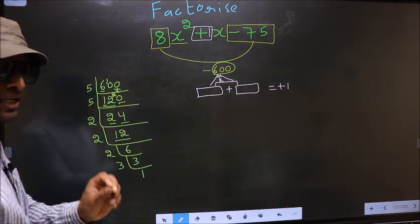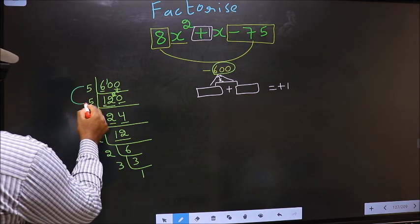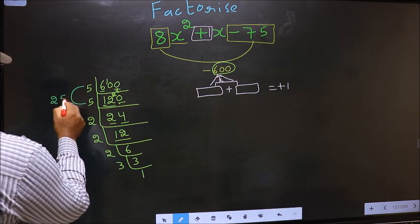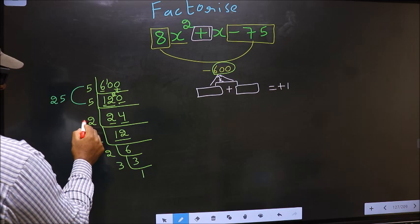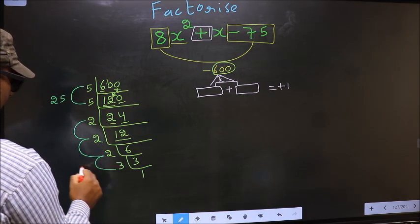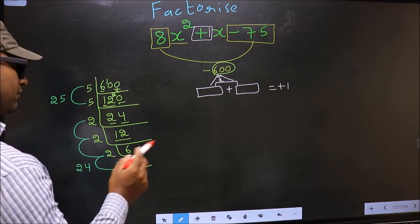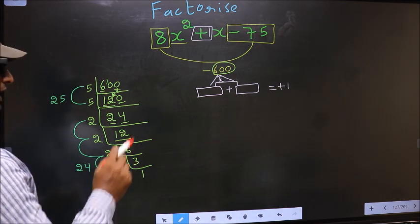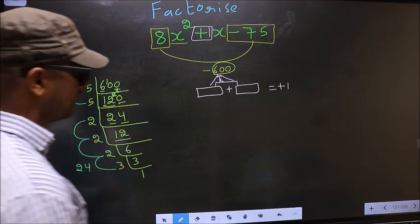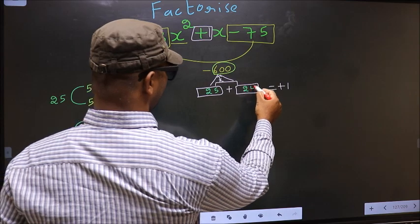Now the 2 numbers should be 5 into 5, 25. And the second number is 2 into 2, 4 into 2, 4 into 2, 8 into 3, 24. 25 minus 24, 1, 25 into 24, 600. So here you write 25 and here 24.